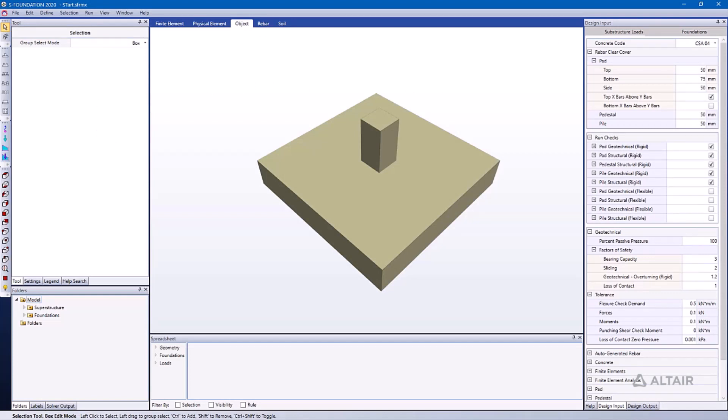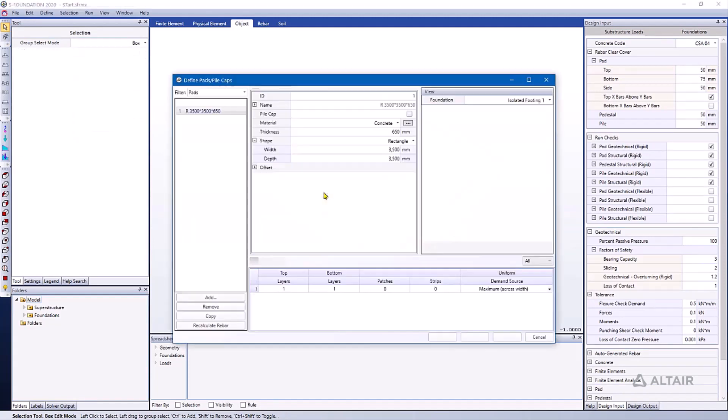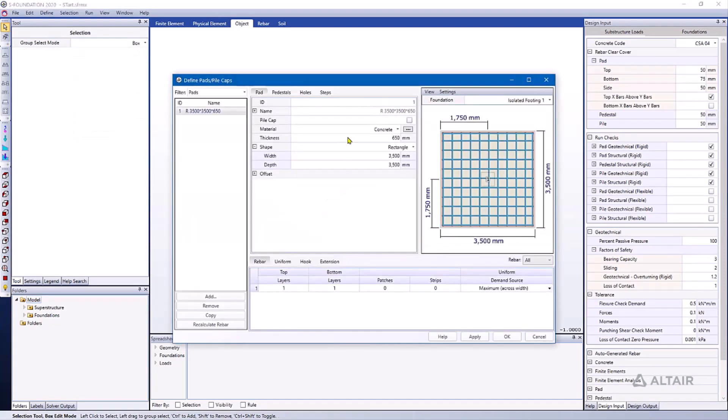So this is the model that we're dealing with. Again, I've illustrated this in other exercises, but I'm going to go through it again. If we go to the Define Pad Pile Cap dialog, here we can see the thickness represented with 650 mm and we have a 3.5 m square pad with 25M bars spaced at 350 mm spacing in X and Y.